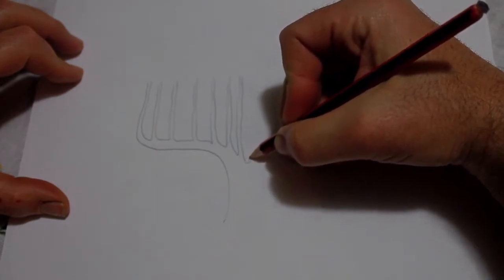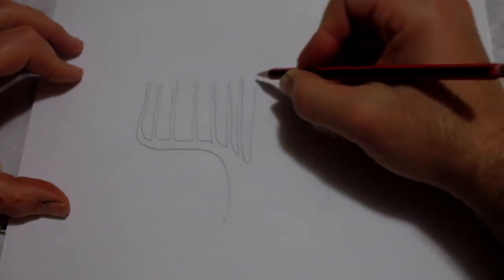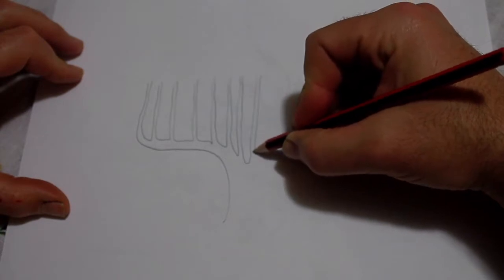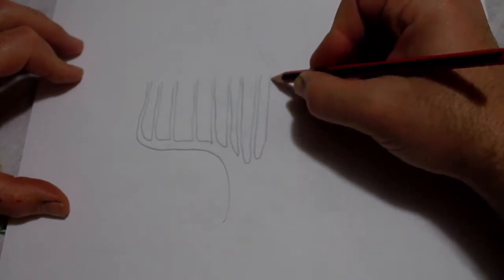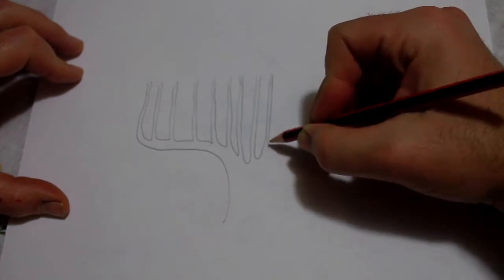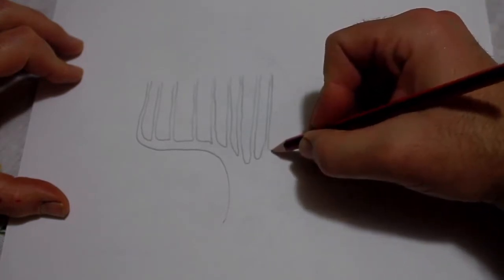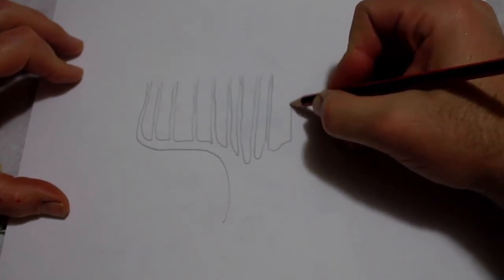So your grapevine's going to end up sort of looking a bit like this. And you want to use solid lines when you're drawing the grapevine. You don't want to take your pencil off the page and do sketchy marks. You want nice solid lines as you draw it.